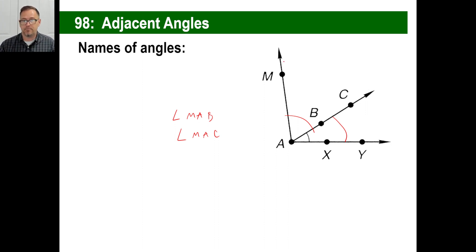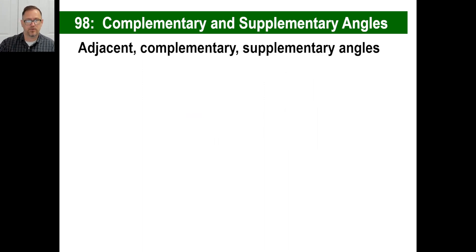Now, if you want to name this entire big honking thing right there, you'd have to say that's going to be angle M, A, X, or you could say M, A, Y, or Y, A, M, or X, A, M. That's what you'd have to do. Just make sure you differentiate if several angles have the same vertex, they share the same vertex.